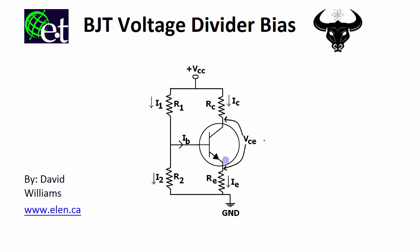The biasing position is independent of the value of beta, and even for a given transistor, the beta value can change. Beta is very sensitive to temperature. So if you've designed a circuit to have a particular operating point and the temperature changes, beta is going to change, which could affect your biasing point, but the voltage divider bias circuit protects somewhat against that.